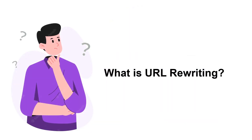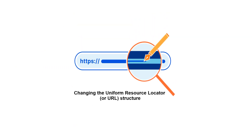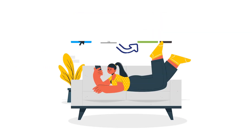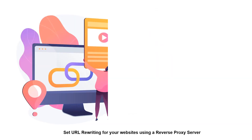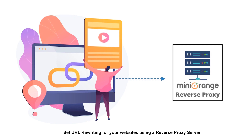So what is URL rewriting? URL rewriting is a method for changing the uniform resource locator structure while loading a page to make it easier to type and more readable. You can set URL rewriting for your websites using a reverse proxy server.